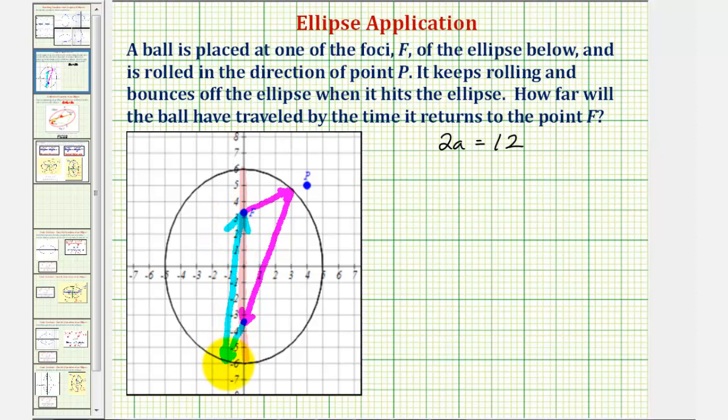So notice how the ball has traveled another 12 units. And therefore, the total distance traveled would be equal to two A plus two A, or two times two A, or in our case, two times 12, which equals 24 units.